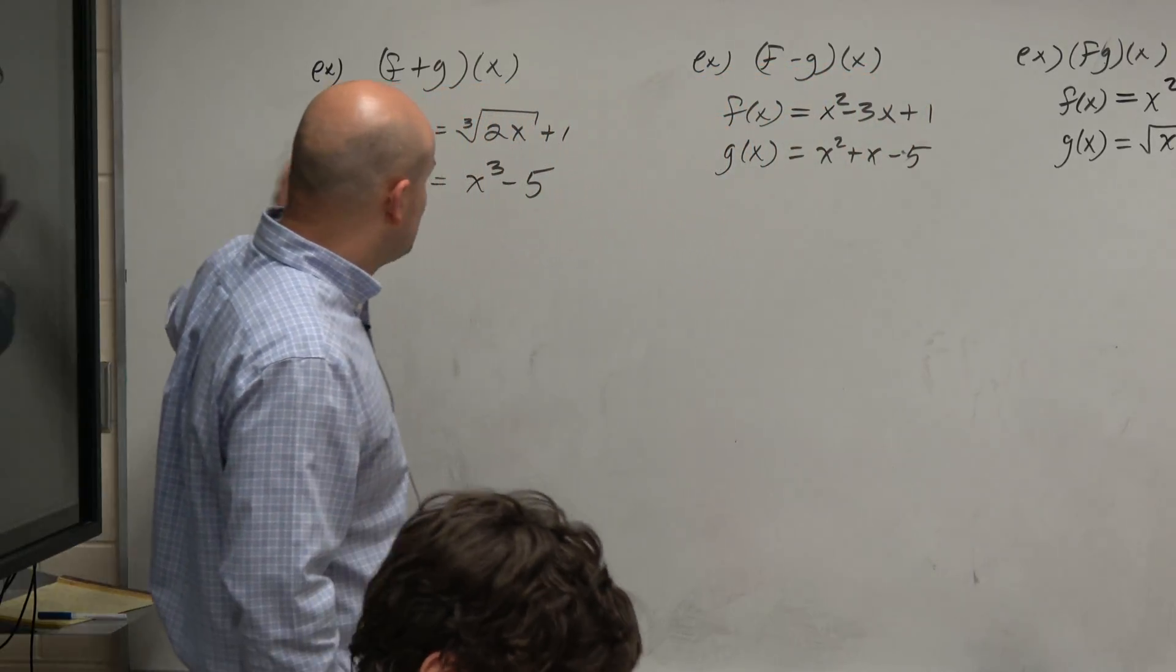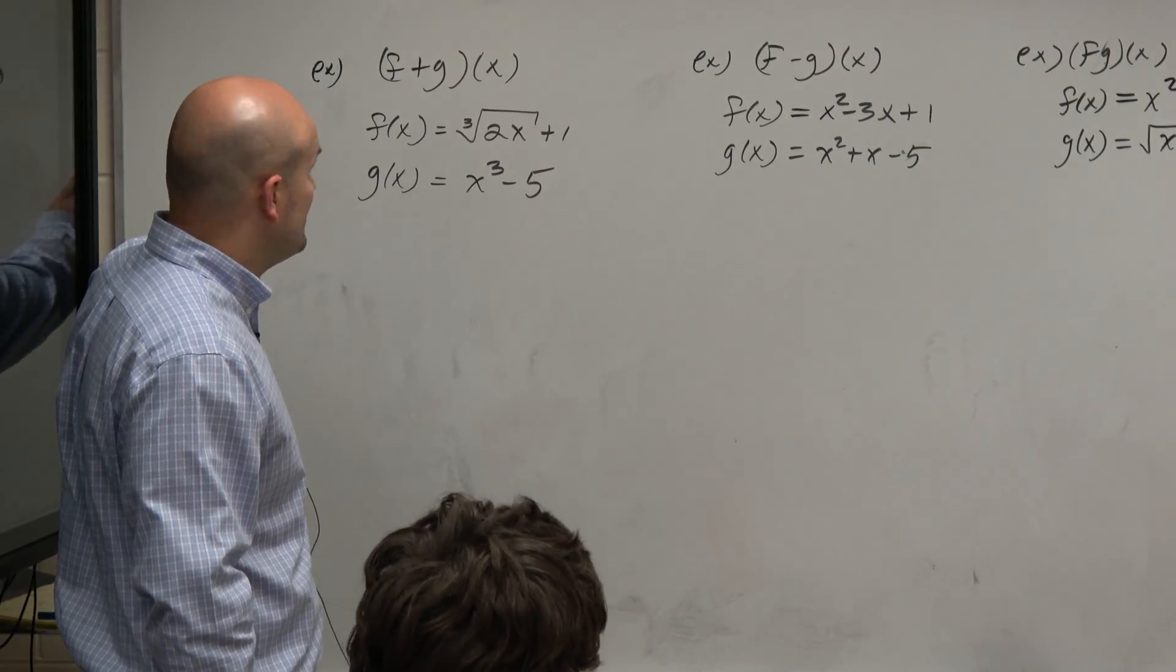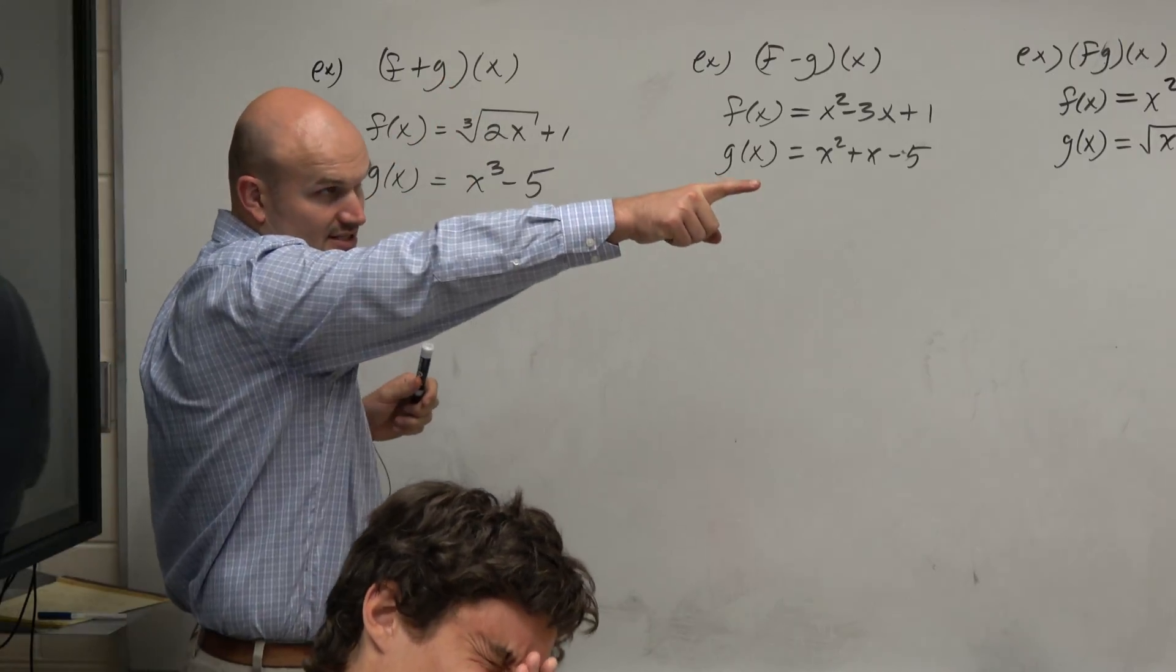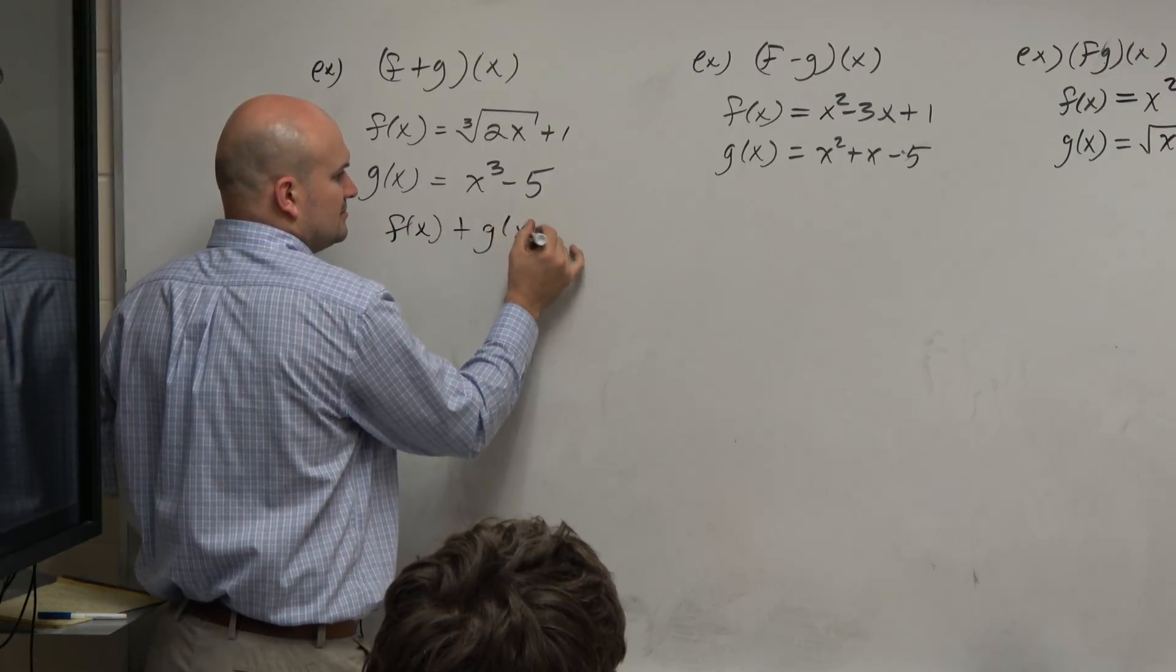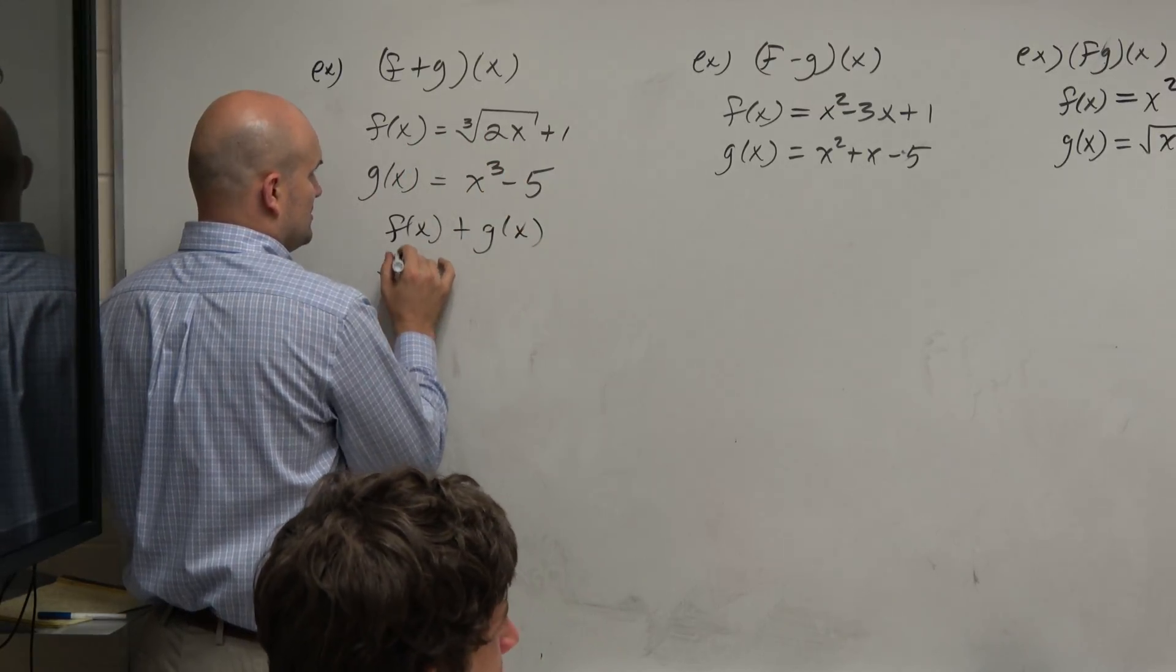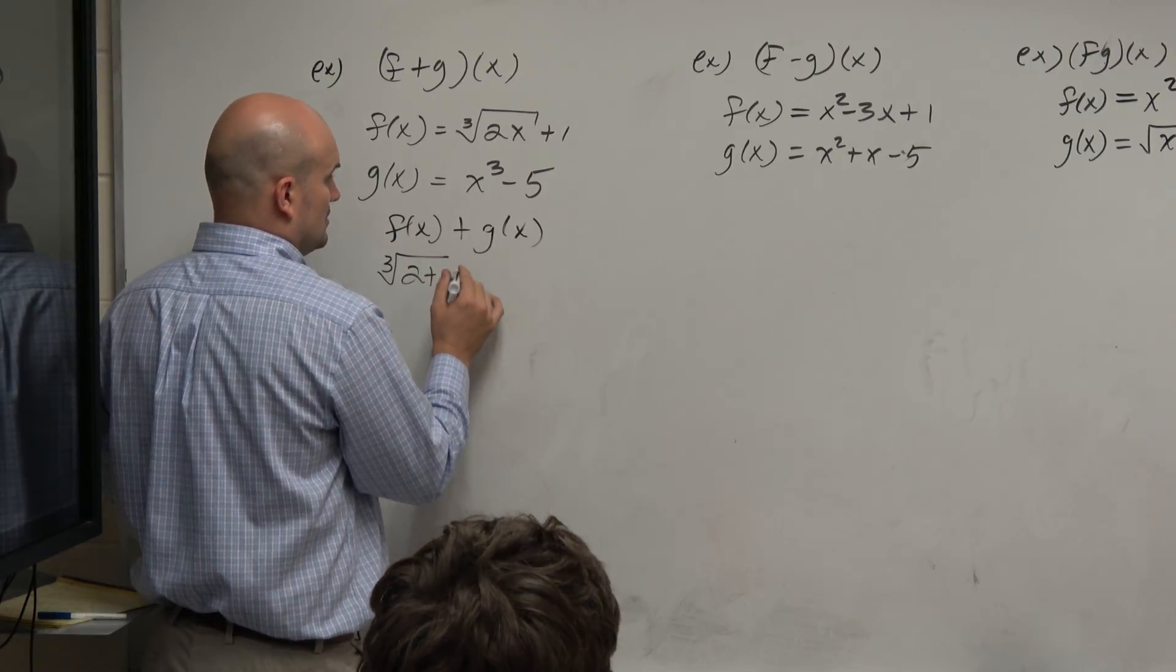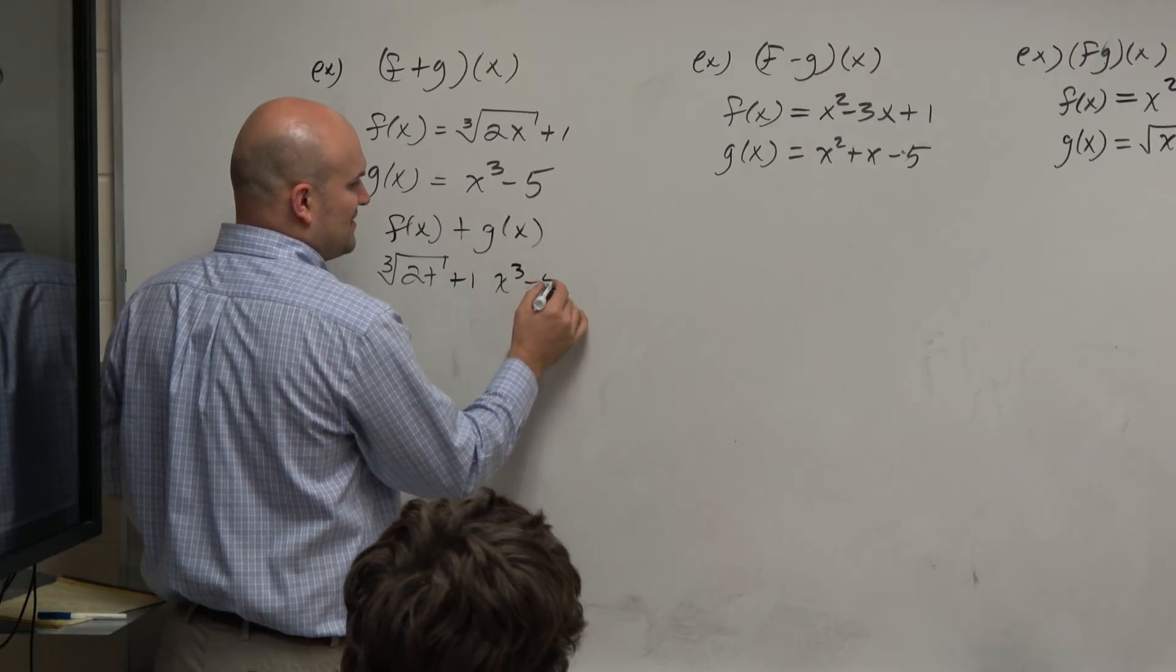So in this case, what we have is the cube root of 2x plus 1, and then we have x cubed minus 5. And we're just looking into adding the function. So if you see f plus g of x, you guys can see on the board, that's really just f of x plus g of x. So f of x is cube root of 2x plus 1, and g of x is x cubed minus 5.